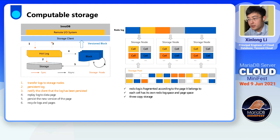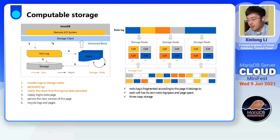What kind of storage can meet the separation of computing and storage architecture? That is computable storage. The storage node executes the storage logic of the database. When redo log is sent to the storage cell, each cell persists the redo log and notifies the storage client in the compute node that the log has been persisted. After the compute node confirms the log has been persisted, the relative data page is flushed. In the background, the storage cell applies the redo log to the data page and then persists a new version of the page. Each page has a different version in storage — the master node reads the latest version, and the replica may read an older version.